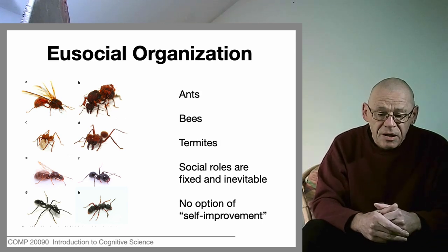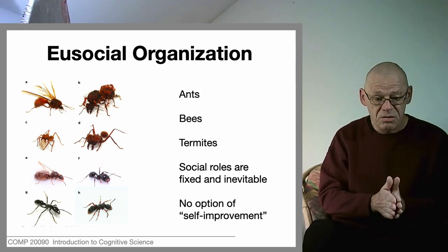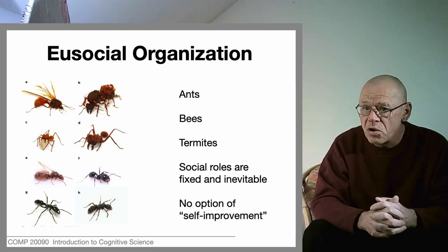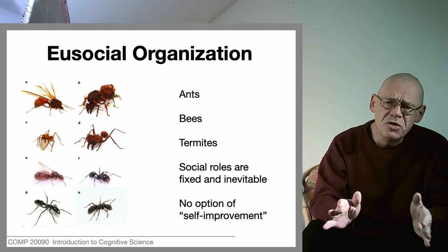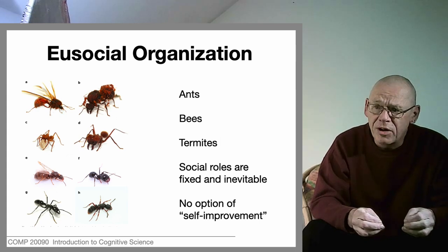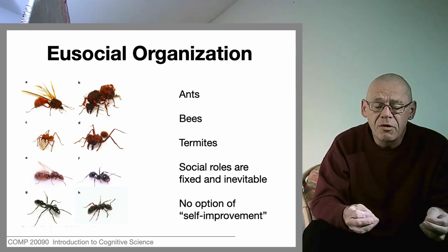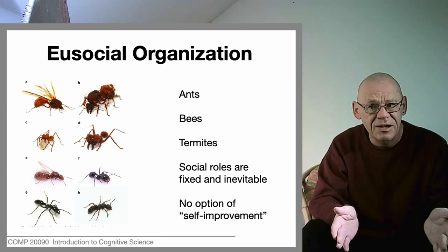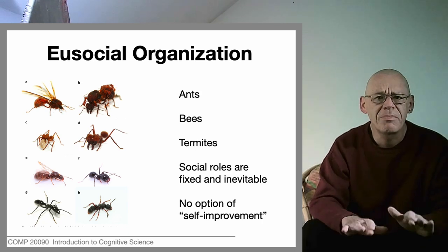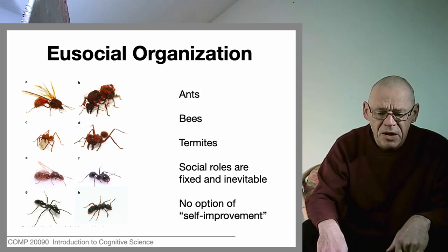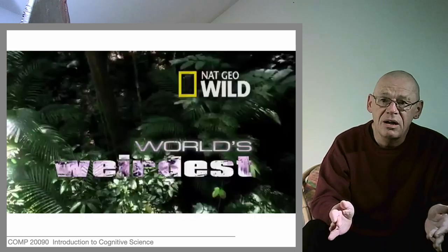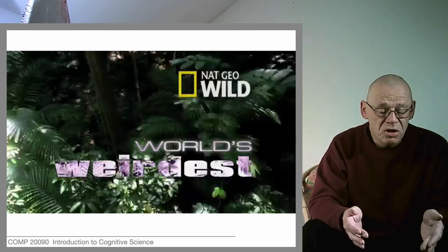What the Victorians didn't know is that eusocial organization is not unique to insects. There is even one mammal that engages in this kind of eusocial organization, showing that this form of social organization is independent of the body morphology of the animal in question. If you find eusocial organization in both insects and a mammal, it becomes independent of the animal's substructure. Here is a short video about the naked mole rat, the mammal that exhibits eusocial organization.